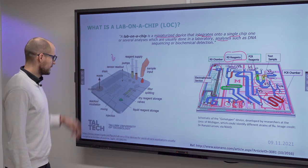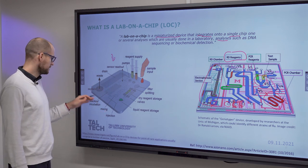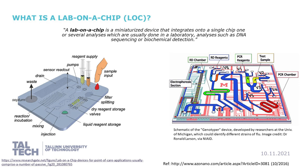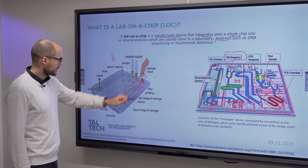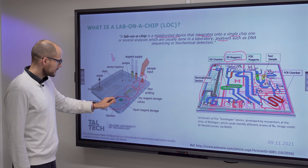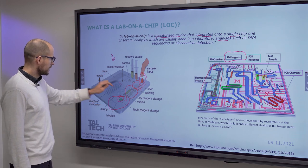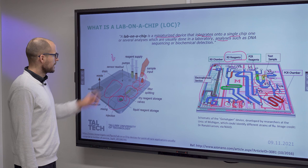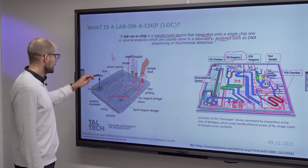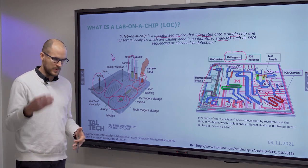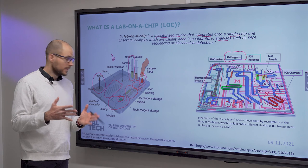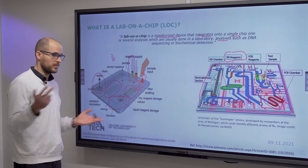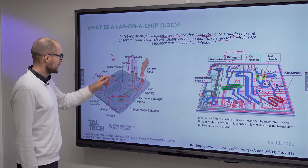Here is another example — a polymer chip without electronics, but with many things integrated: sample input ports, splitting, dry reagent storage, liquid reagents, and an incubation chamber or channels for incubation of your sample. Reagents are fed in externally. There is also a septum — a rubber membrane through which you can pierce a syringe and remove waste — and a drainage channel.